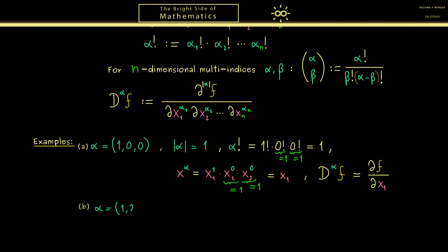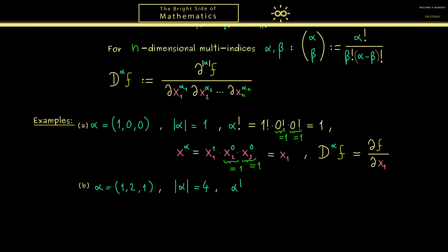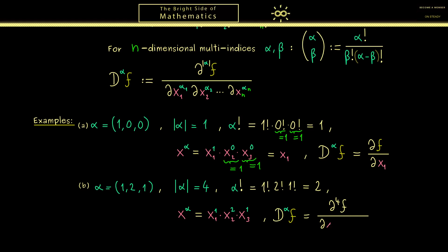Now let's choose a more complicated alpha: α = (1, 2, 1). Adding all components gives |α| = 4, so the partial derivative will be of order 4. The factorial is α! = 1! × 2! × 1! = 2. The monomial x^α = x₁¹ · x₂² · x₃¹. The corresponding partial derivative D^α f, written in Leibniz notation, has d⁴f in the numerator, dx₁ once, dx₂ twice, and dx₃ once in the denominator.